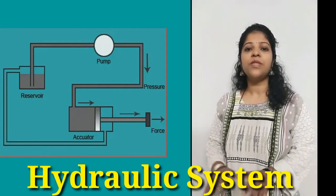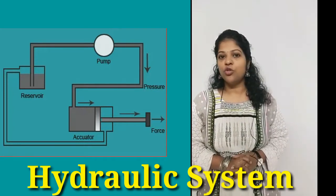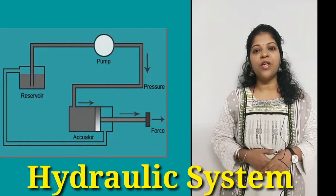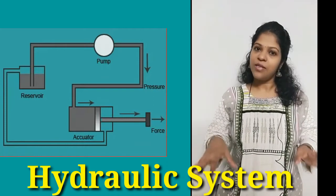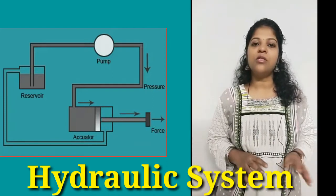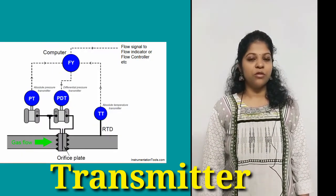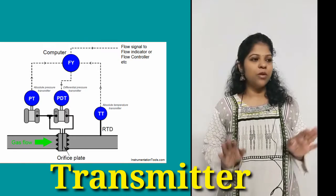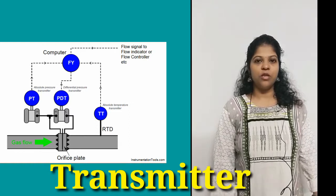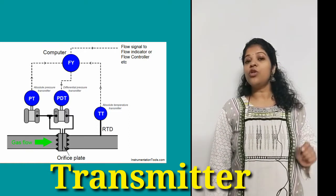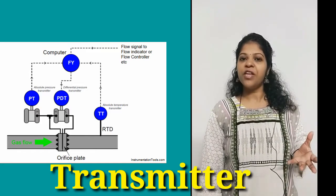Hydraulic systems are popular when heavy loads are involved. As you can see in the diagram, there is a reservoir, actuator, and pump. Most components are similar to the pneumatic system — just the medium of operation changes. Chapter three is about transmitters. A transmitter simply transmits a signal from one point to another. Sensors can sense, but they lack a circuit to transmit the signal to a remote location like a control room.